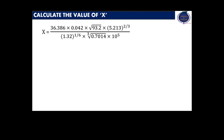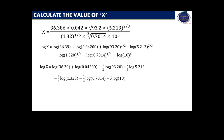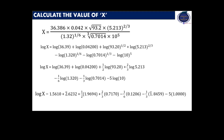First, we have to take the logarithm on both sides. Applying the rules of logarithm, the numerator will be taken as positive and the denominator will be taken as negative. Multiplication is converted into addition and division is converted into subtraction. Now applying the rule of powers, it is written as: log x = log 36.39 + log 0.04200 + (1/2) log 93.20 + (2/3) log 5.213 − (1/6) log 1.320 − (1/3) log 0.7014 − 5 log 10. Now using the logarithm table, we can write the characteristic and mantissa of log x.